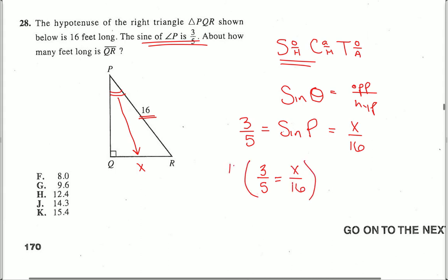I multiply both sides by 16. This one crosses off and I get X equals 9.6. Letter choice G.